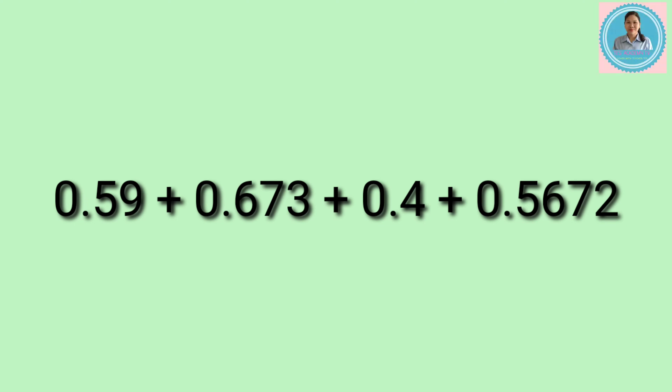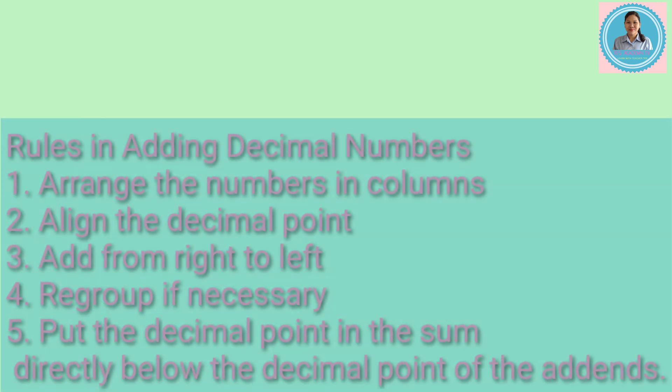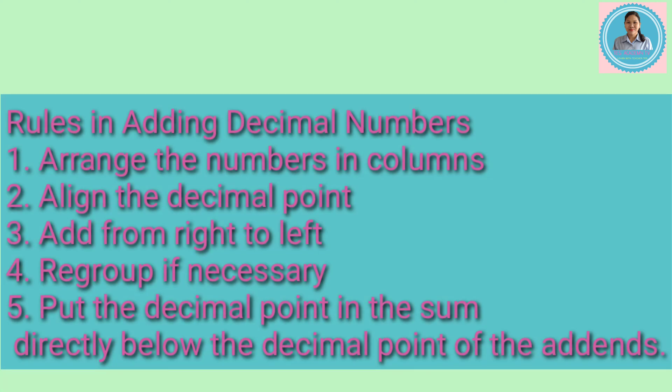Let's start the lesson with this example: 59 hundredths plus 673 thousandths plus 4 tenths plus 5,672 thousandths. How are we going to add decimal numbers? Here are the rules in adding decimal numbers. First, arrange the numbers in columns. Second, align the decimal point.